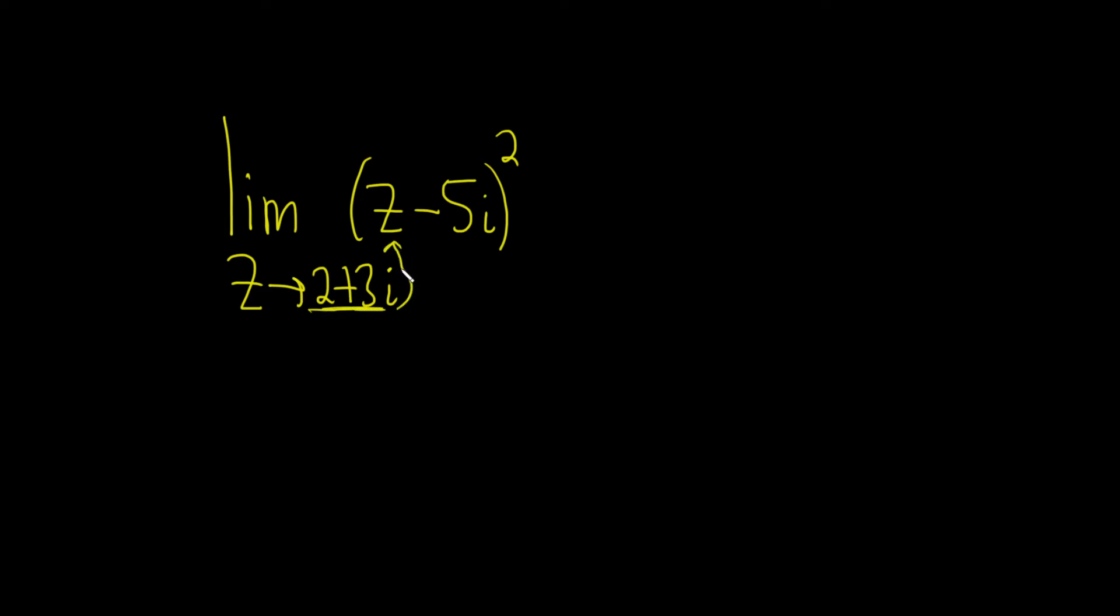We could just take this number and plug it in. There's no division by zero. There's nothing funky going on. When you do that, you drop the limit sign. So we end up with 2 plus 3i minus 5i, and this whole thing is squared.